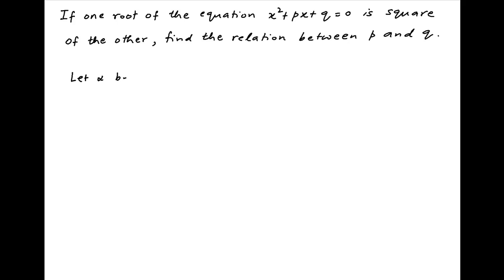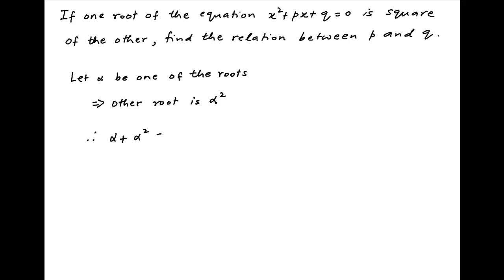Let alpha be one of the roots of the equation x squared plus px plus q equals 0. The second root of this quadratic equation is equal to alpha squared. Therefore, the sum of the roots, alpha plus alpha squared, is equal to minus p. And the product of the roots, alpha times alpha squared, which equals alpha cubed, is equal to q.